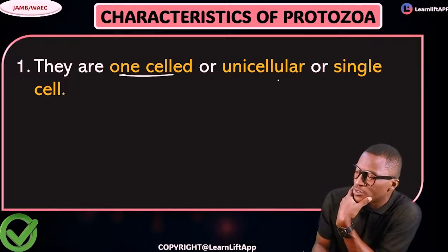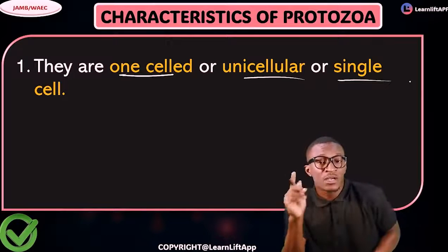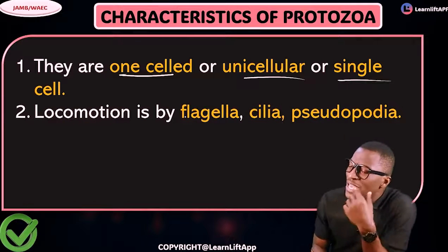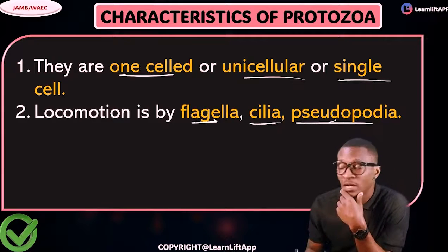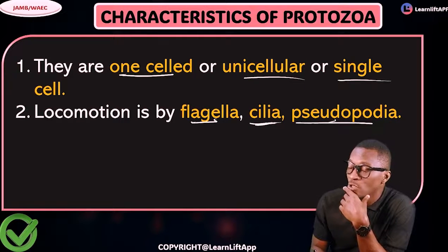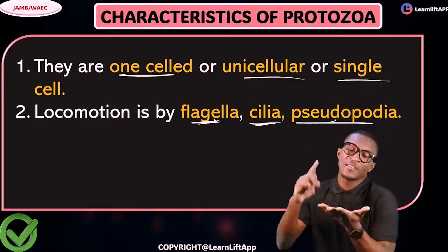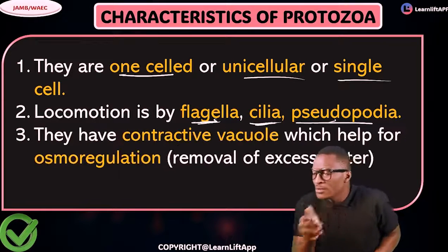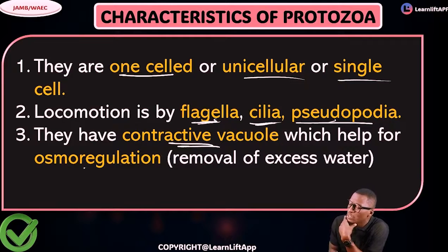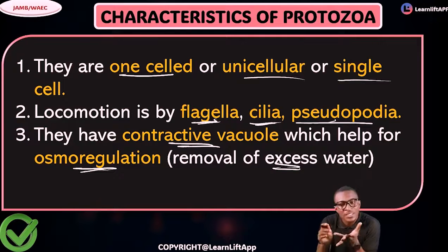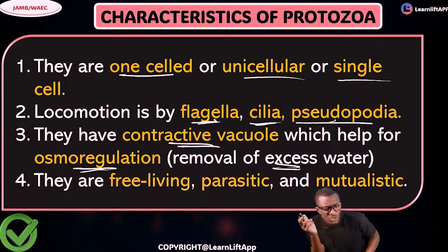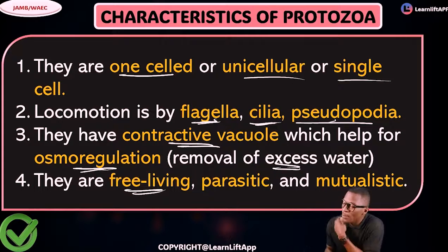What are the characteristics of protozoa? Number one: they are unicellular — one cell, single cell. Number two: their locomotion is by flagella, cilia, and pseudopodia. Amoeba uses pseudopodia, Paramecium uses cilia, and Euglena uses flagella. Number three: they have a contractile vacuole, which is used for osmoregulation — to remove excess water.